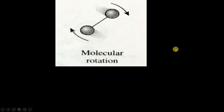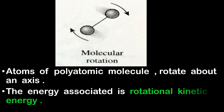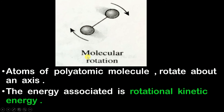The second microscopic form of energy: in a polyatomic molecule, there are many atoms present, and there is a chance that the atoms rotate about an axis. When the atoms rotate about an axis, they obviously have some kinetic energy. The energy associated with the rotation of atoms about an axis is called rotational kinetic energy.